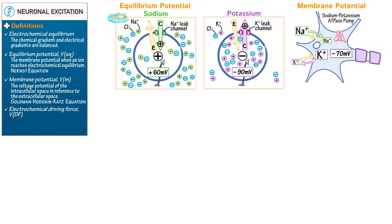Now introduce the sodium-potassium ATPase pump, which resets the ion concentrations. Show that it redistributes three sodium ions out of the cell for every two potassium ions it pulls back in.